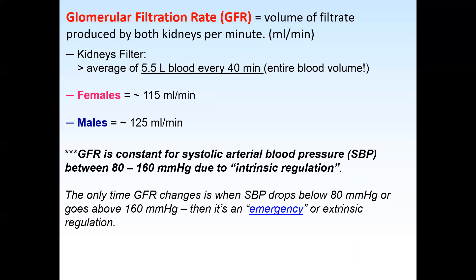The quick fix only lasts about 10–15 seconds maximum. The long fix starts with the kidneys themselves — the JGA senses low arterial blood pressure coming in through the renal artery. It's a sensor, integrating center, and effector, and it secretes renin. Renin goes to the liver, then the lungs, then the adrenal cortex, producing aldosterone. At the distal convoluted tubule, aldosterone causes salt retention, water follows, blood volume goes up, and blood pressure goes up. That hormone can be in your blood for days.